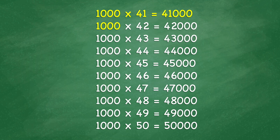1,000 x 41 equals 41,000. 1,000 x 42 equals 42,000. 1,000 x 43 equals 43,000. 1,000 x 44 equals 44,000. 1,000 x 45 equals 45,000. 1,000 x 46 equals 46,000. 1,000 x 47 equals 47,000. 1,000 x 48 equals 48,000.